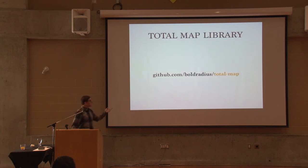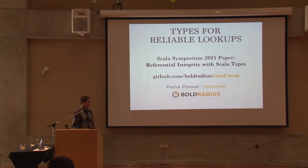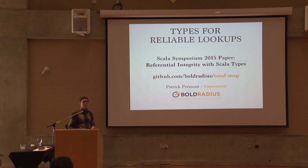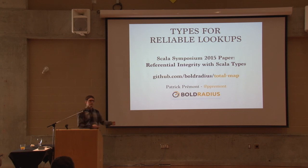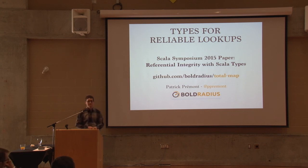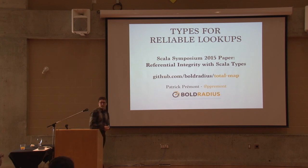The library is available on GitHub at boldradius/total-map, and there's a reference to a paper presented at the Scala Symposium 2015 called 'Referential Integrity with Scala Types.' You can get that paper from the GitHub page, which links to the conference page. That's it.